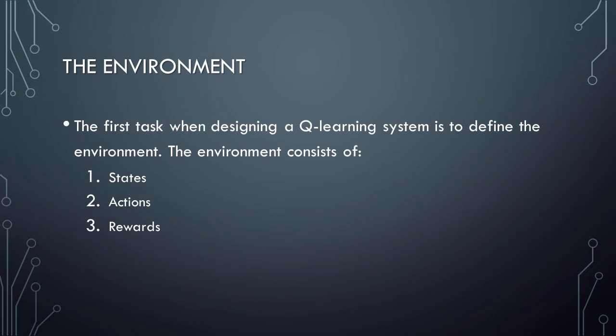As a quick refresher, remember that the first task when designing a Q-learning system is to define the environment. The environment consists of states, actions, and rewards. The AI agent will use the states and rewards as inputs, and will generate actions as outputs.